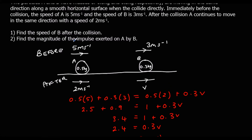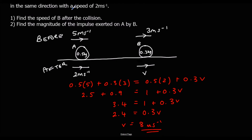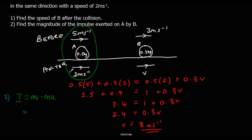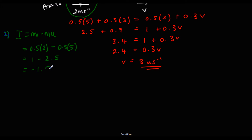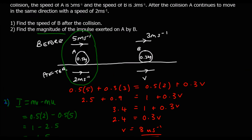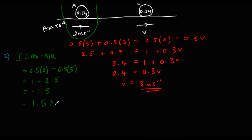Find the magnitude of the impulse exerted on A by B. Looking at A, impulse is MV minus MU. That's 0.5 times 2 minus 0.5 times 5, which is 1 minus 2.5, giving negative 1.5. But since we only care about the magnitude of the impulse, the answer is 1.5 newton seconds.